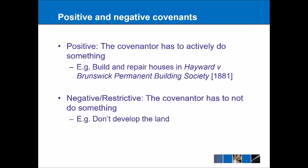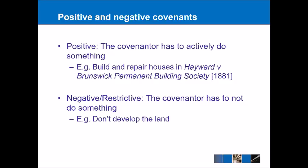That distinction is between positive and negative covenants. A positive covenant is where the covenantor has to actively do something — often involves the paying of money, but it might not necessarily be that. So mowing a lawn would be a positive covenant because the person has to actively do something. A negative or restrictive covenant, on the other hand, is where you're preventing someone from doing something — such as the idea that you shouldn't build on the land, as we saw in Tulk v Moxhay.